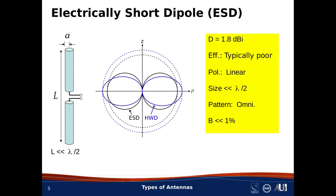First, we do the wire-type low-gain antennas. The simplest is the electrically short dipole, abbreviated ESD. The defining feature is that the length is much less than one-half wavelength. This results in a directivity of 1.8 dBi, regardless of the exact length. The radiation efficiency of the ESD is poor, primarily because the real part of the self-impedance is very small — often orders of magnitude less than one ohm — so conductor resistance losses can easily be comparable to the radiated power.